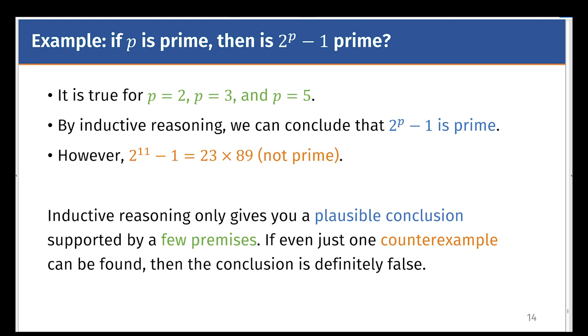However, the following counterexample, 2^11 - 1, states that the conclusion must be false. So you see, in an inductive reasoning, you only get a plausible conclusion that is supported by a few or enough premises. If even just one counterexample can be found, then the conclusion is definitely false.